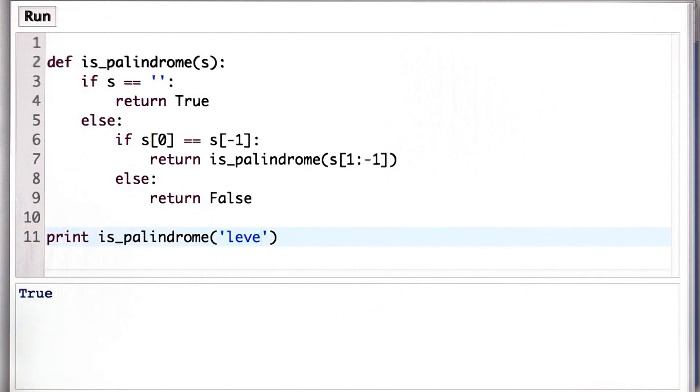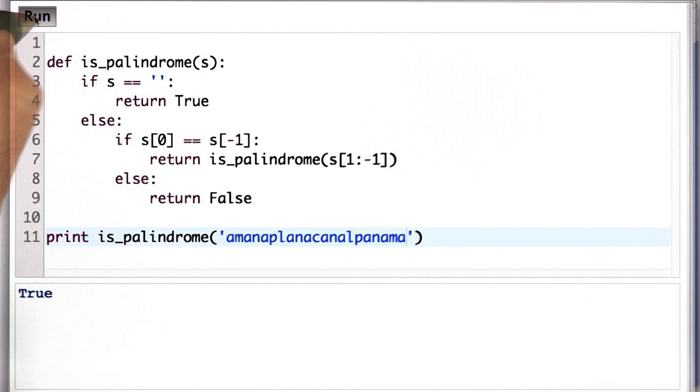And let's try one of the most famous palindromes, a man, a plan, a canal, Panama. And we should get true, which we do.